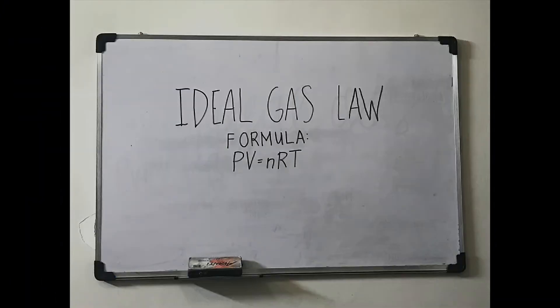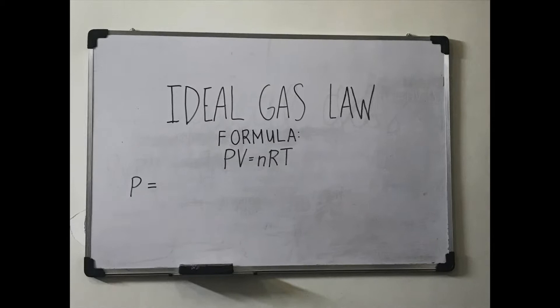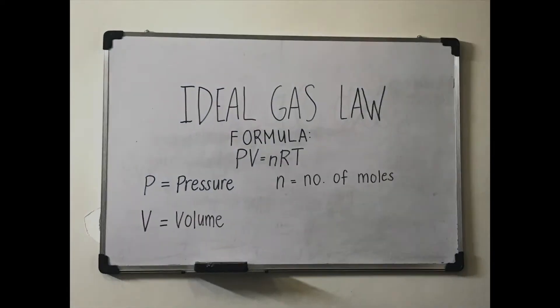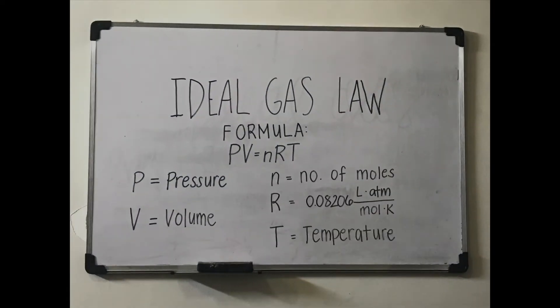The formula for ideal gas is PV is equal to nRT, where P is pressure, V is volume, N is number of moles, and R is a constant equal to 0.08206 liters·atm per mole·kelvin, and T is temperature.